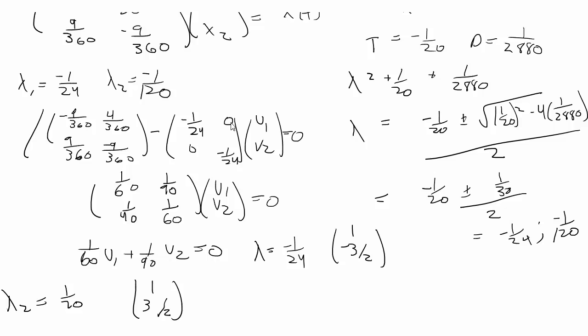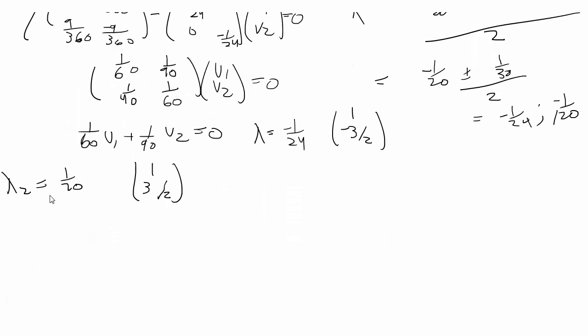Okay, I did this problem on a sheet of paper, and I couldn't read my own handwriting. If you do lambda 2 is equal to negative 1 over 120, you get 1 and 3 halves as the vector. Okay, that was annoying.